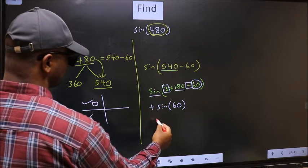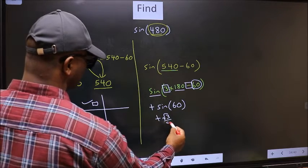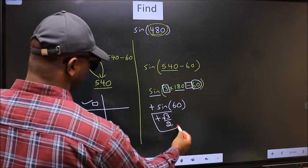So we should put plus. So plus sin 60 is root 3 by 2. This is our answer.